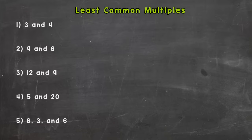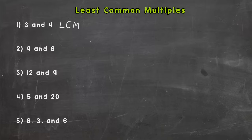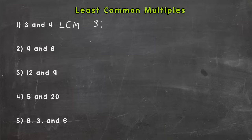Let's start with number one — we are going to find the least common multiple between three and four. You might sometimes see the acronym LCM, which stands for least common multiple. We need to make a list of multiples for both three and four. You might be thinking, what is a multiple? Let's make our list for three first — multiples are the numbers that three can multiply into.